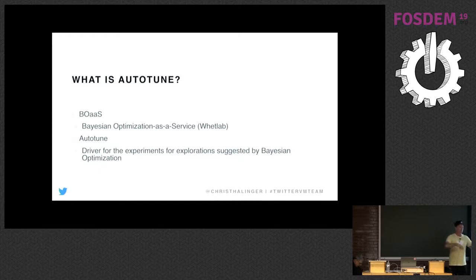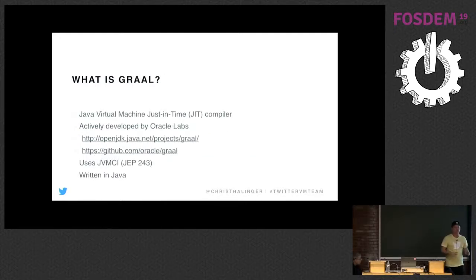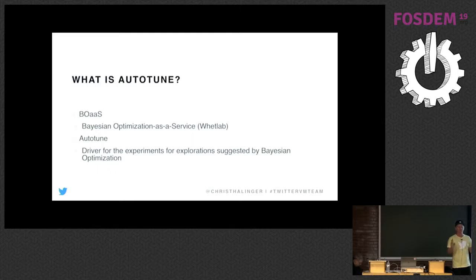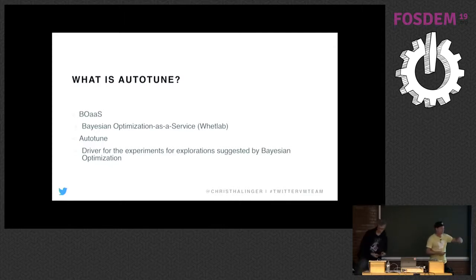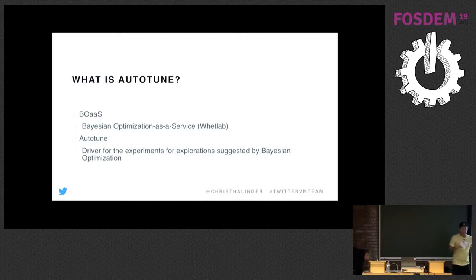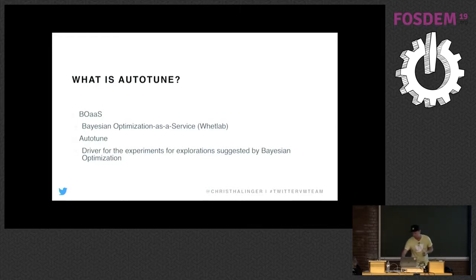We can pass in to Autotune a parameter to tune, and then Autotune talks to the Bayesian optimization part, which is Wet Lab. There's also an open-source version called Spearmint if anyone has heard of it. Spearmint or Wet Lab figures out the next value of the parameter to try, to explore the space and find the optimal configuration.